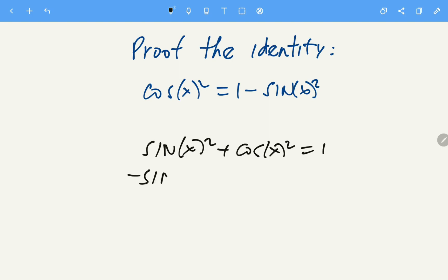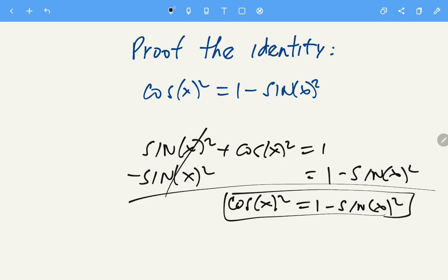The sines cancel and we get cosine squared equals 1 minus sine squared. So we have proven the identity.